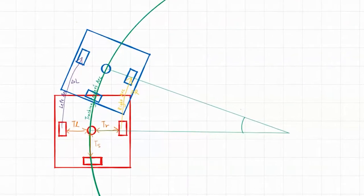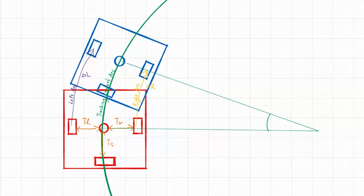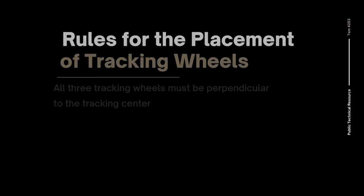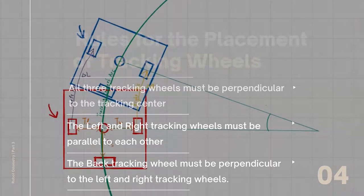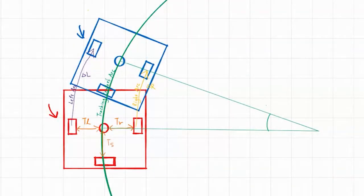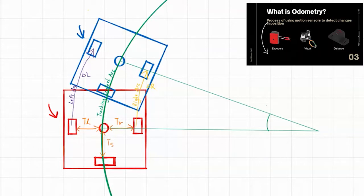Going back to the robot diagram we drew last time, as a reminder, we are moving a robot from its original position outlined in red here, to its new position in blue here. And we have tracking wheels positioned in accordance to the three rules outlined in the previous video to track the distance traveled during this movement. If you're not sure what tracking wheels are and what this diagram is all about, please go check out the first video of the series which goes over the basic theory and usage of odometry.